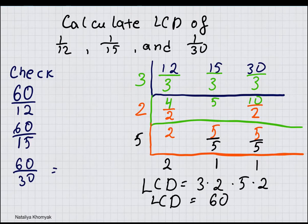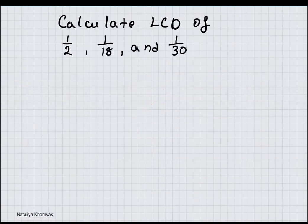30 will go into 60 two times, 15 will go into 60 four times, and 12 will go into 60 five times.